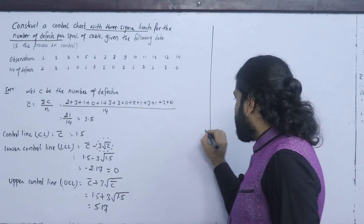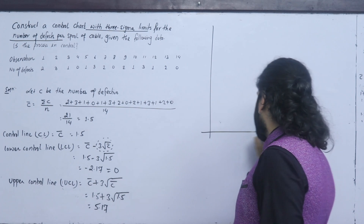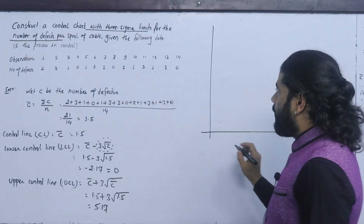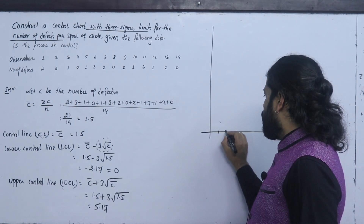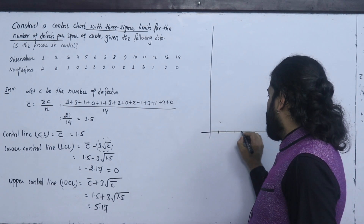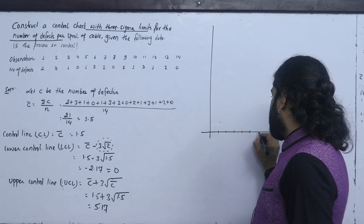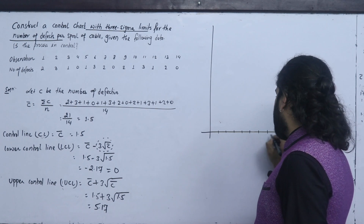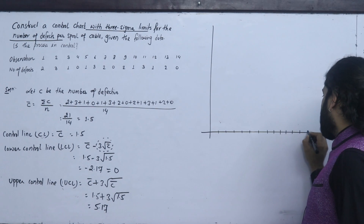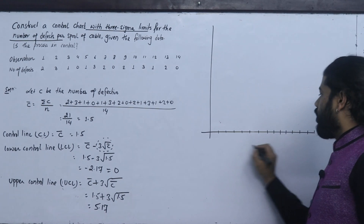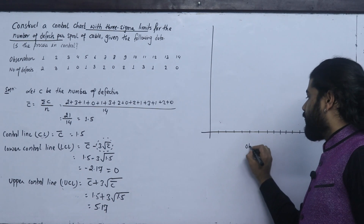The observations are numbered 1, 2, 3, 4, 5, 6, 7, 8, 9, 10, 11, 12, 13, 14. This is the observation axis for the control chart.